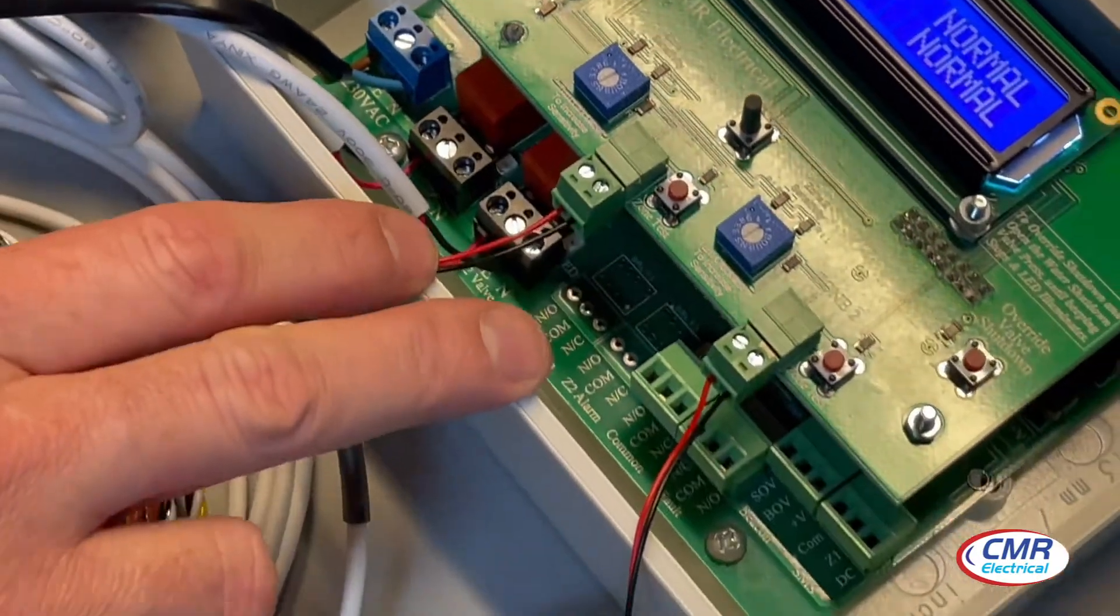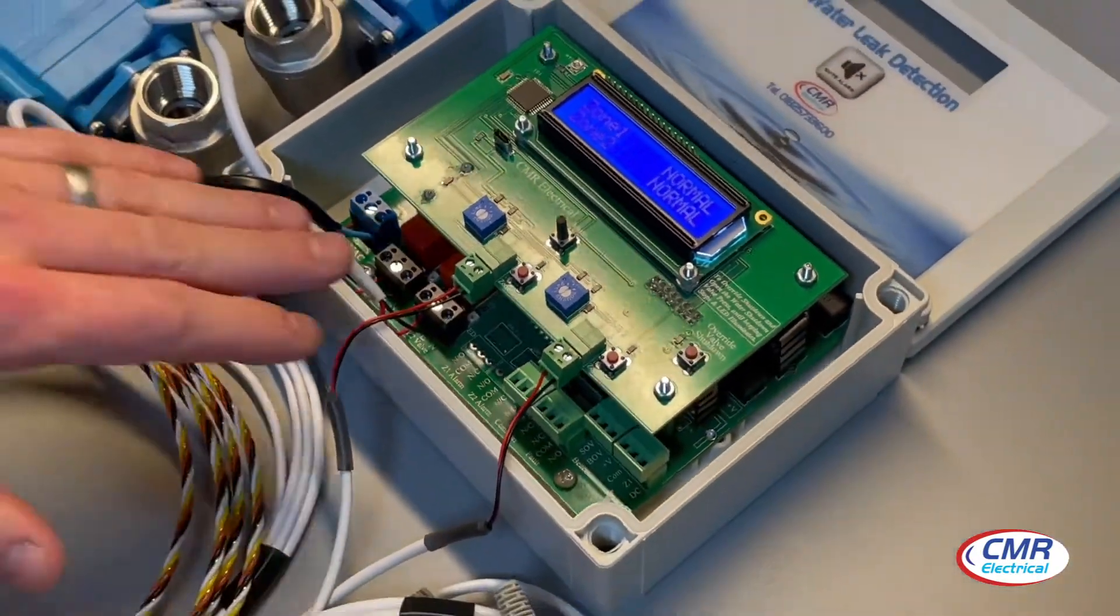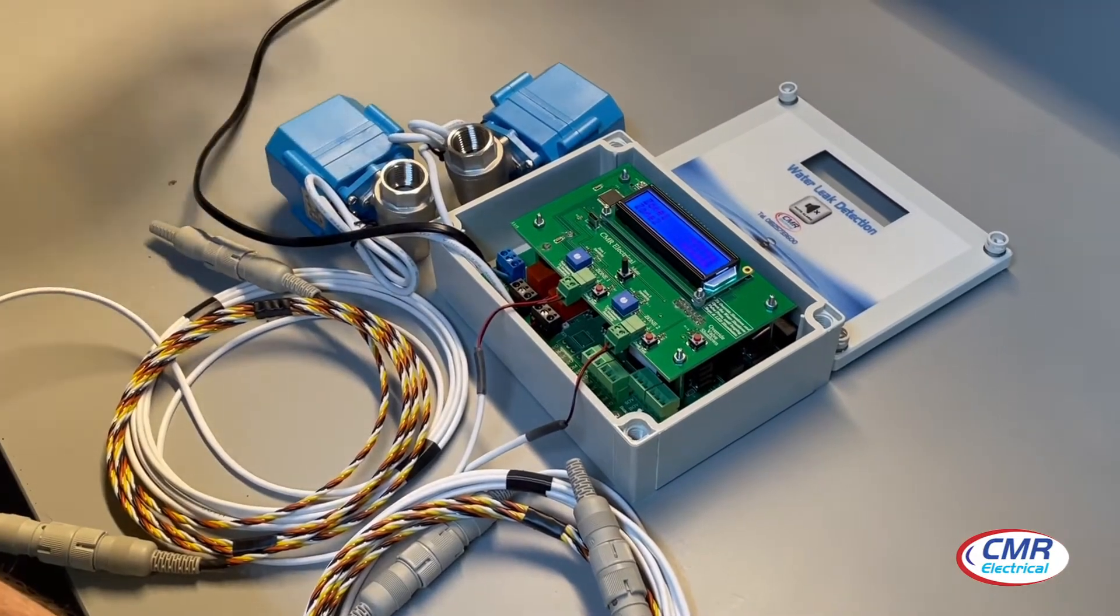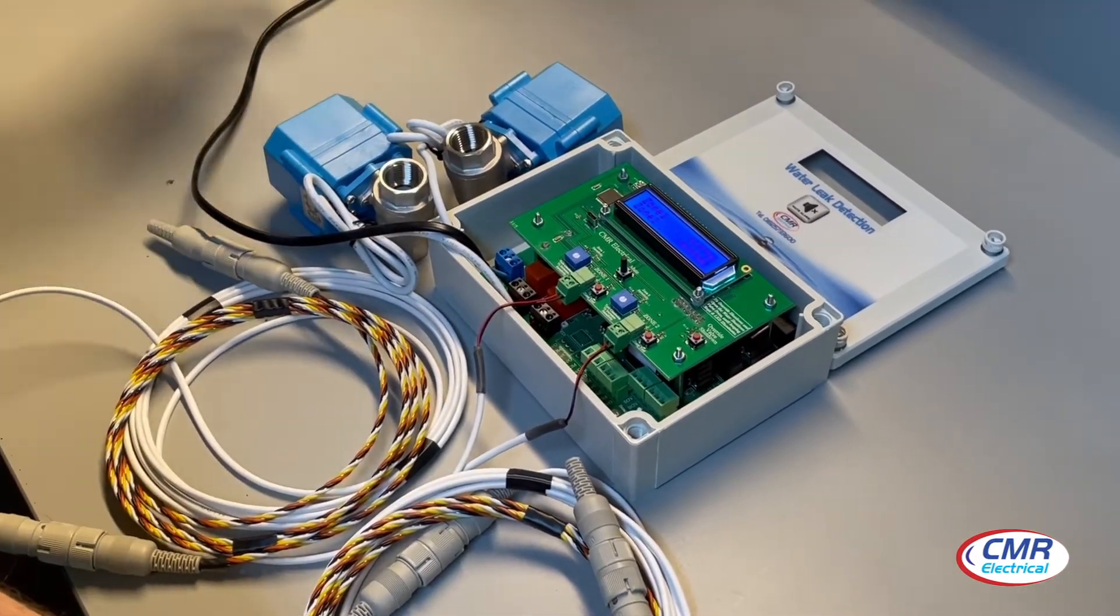This will repeat for zone 2. Again, if you have common valve control, you'll only have one terminal fitted, and it will turn off that particular valve when there's a leak.